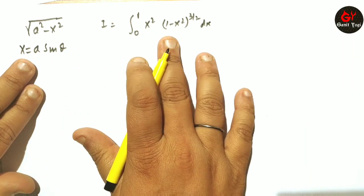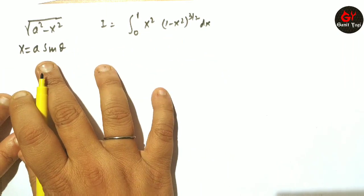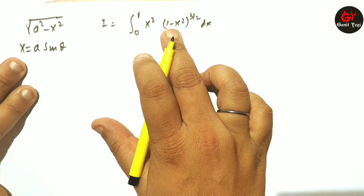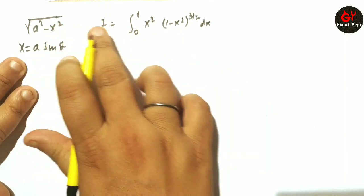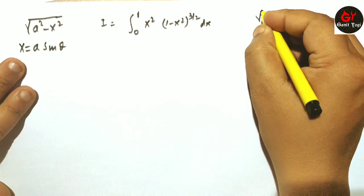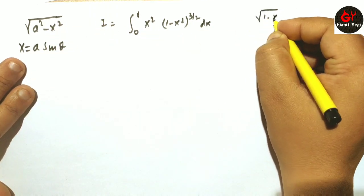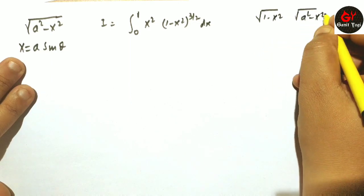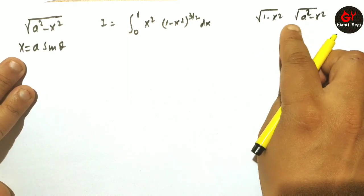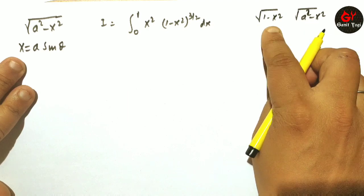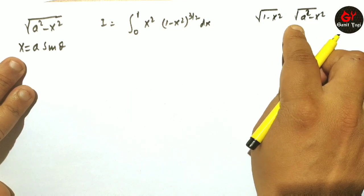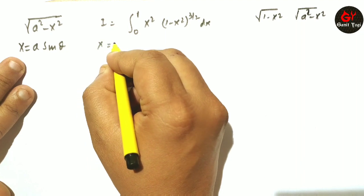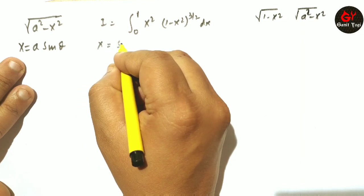In this case I will use x = a sinθ. My a here is 1, because comparing √(1 - x²) with √(a² - x²), my a is 1. Therefore I will substitute x = sinθ.